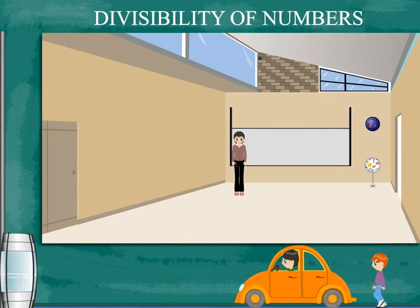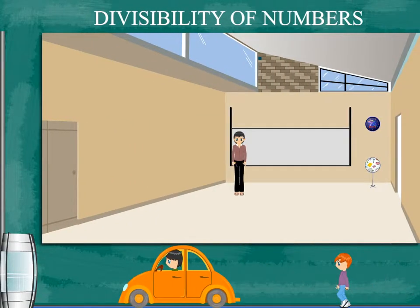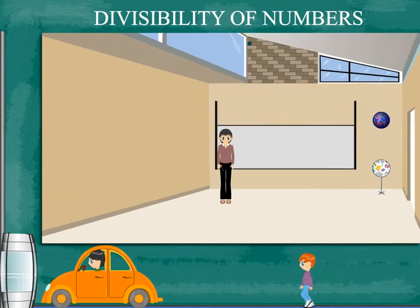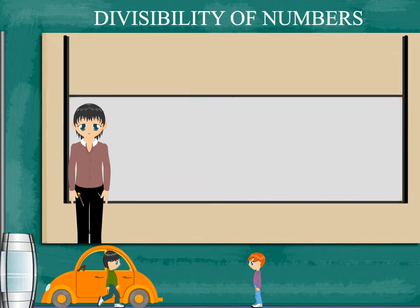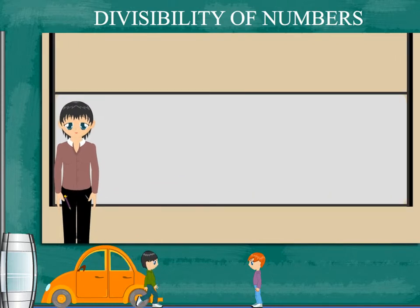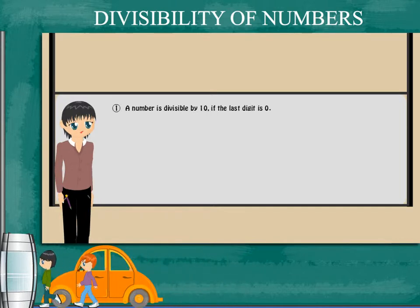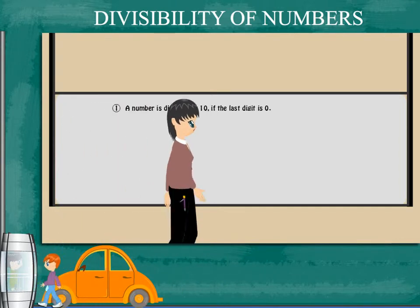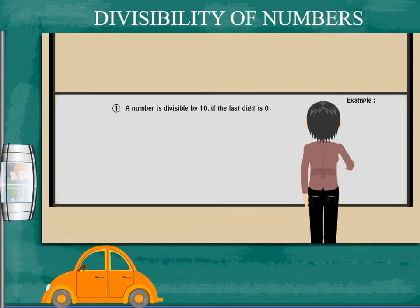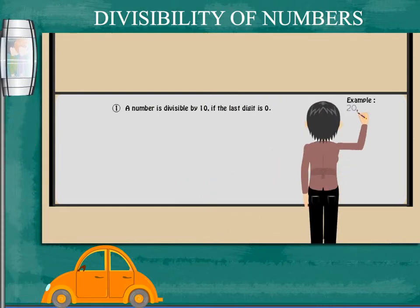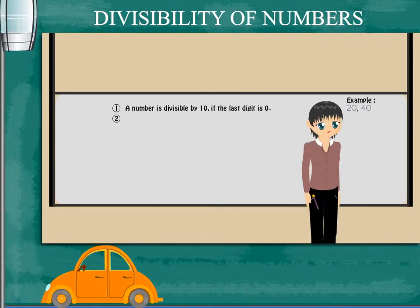Divisibility of Numbers. Teacher Nancy is here to tell us about how to check whether a number is divisible by another number. She writes the first rule: a number is divisible by 10 if its last digit is 0. Examples are 20, 40, etc.